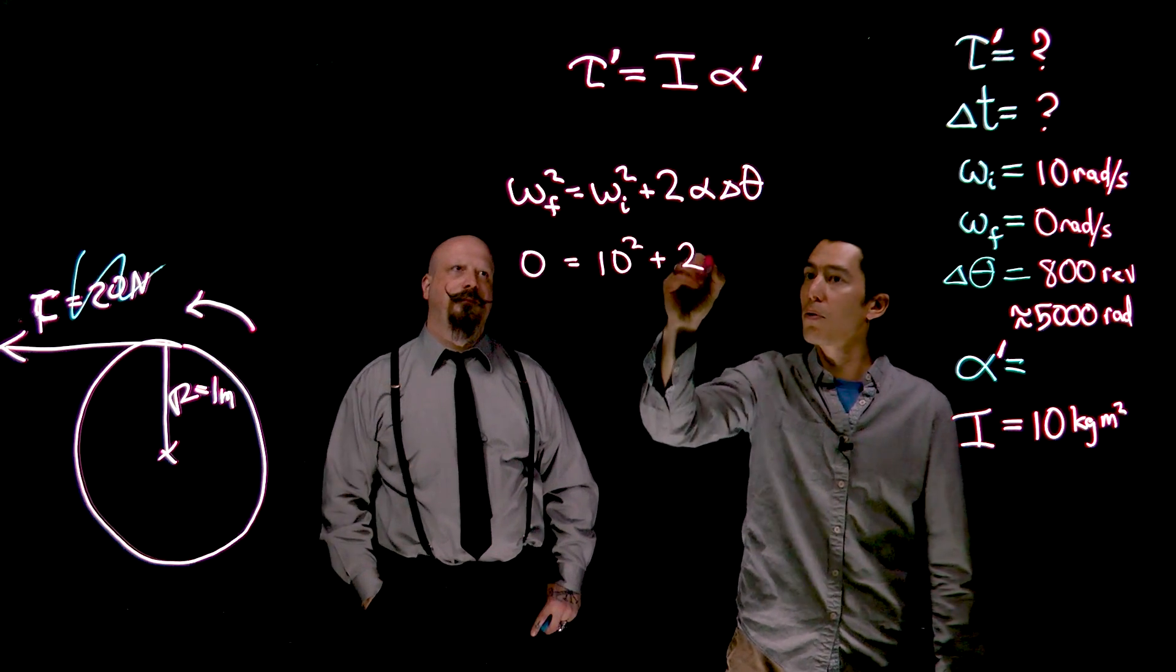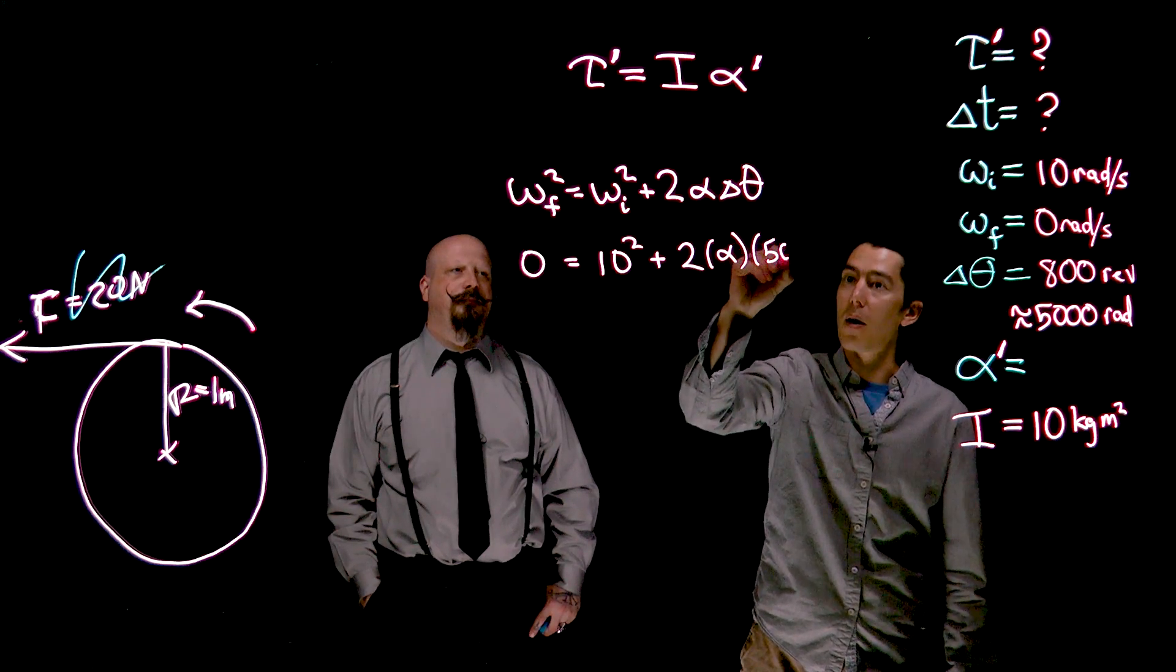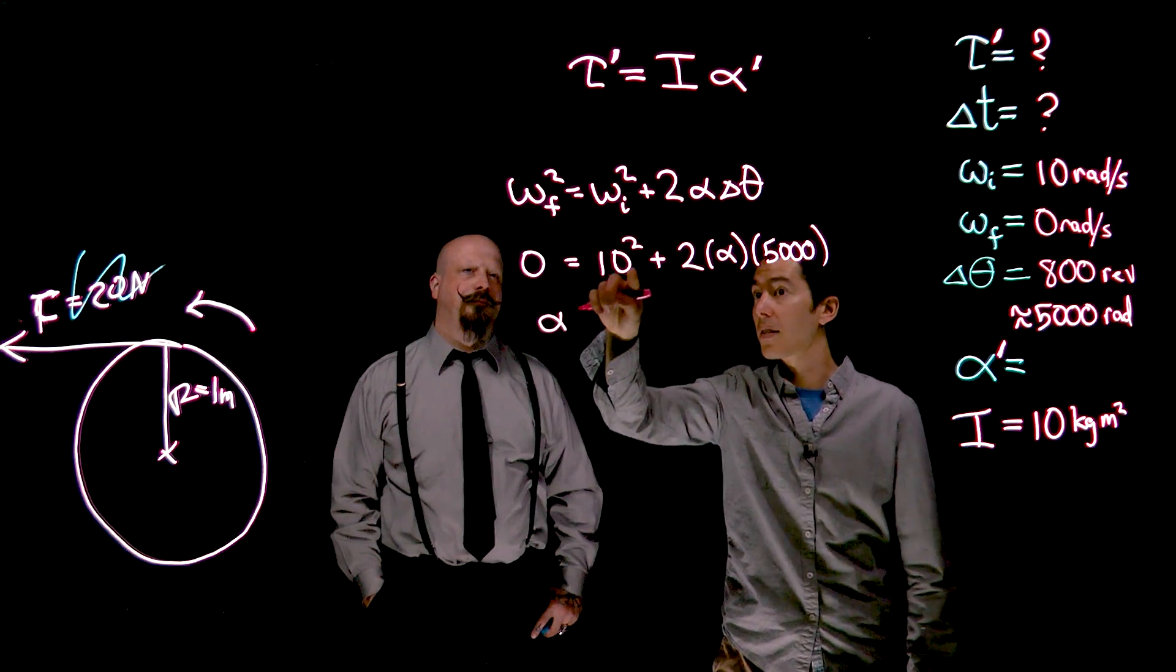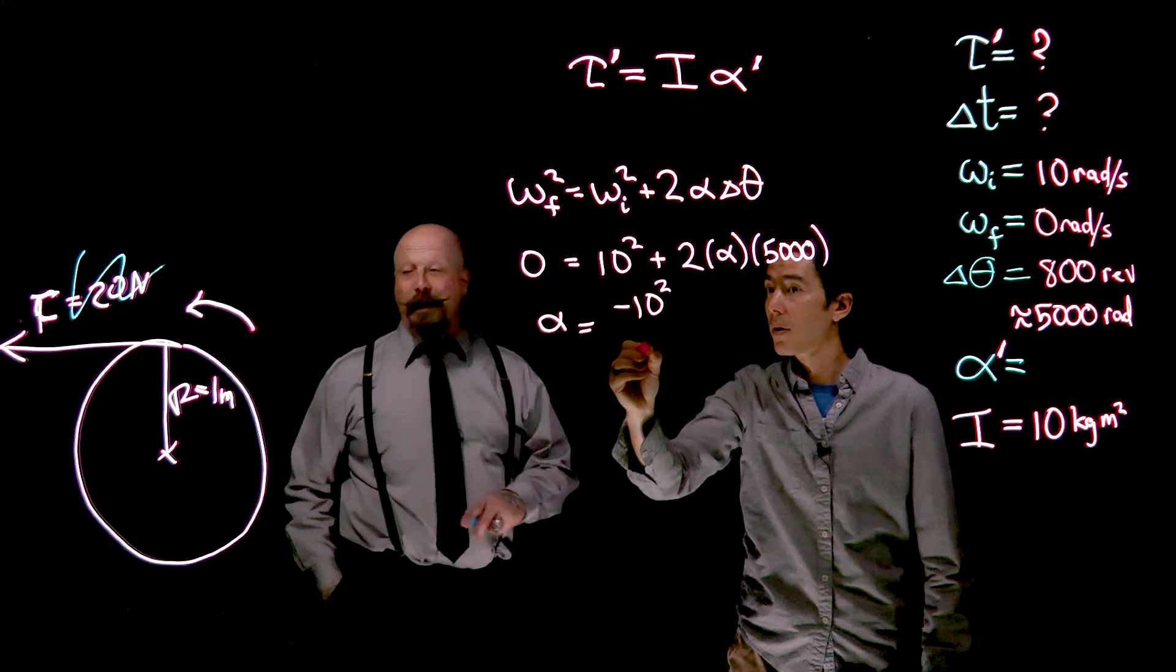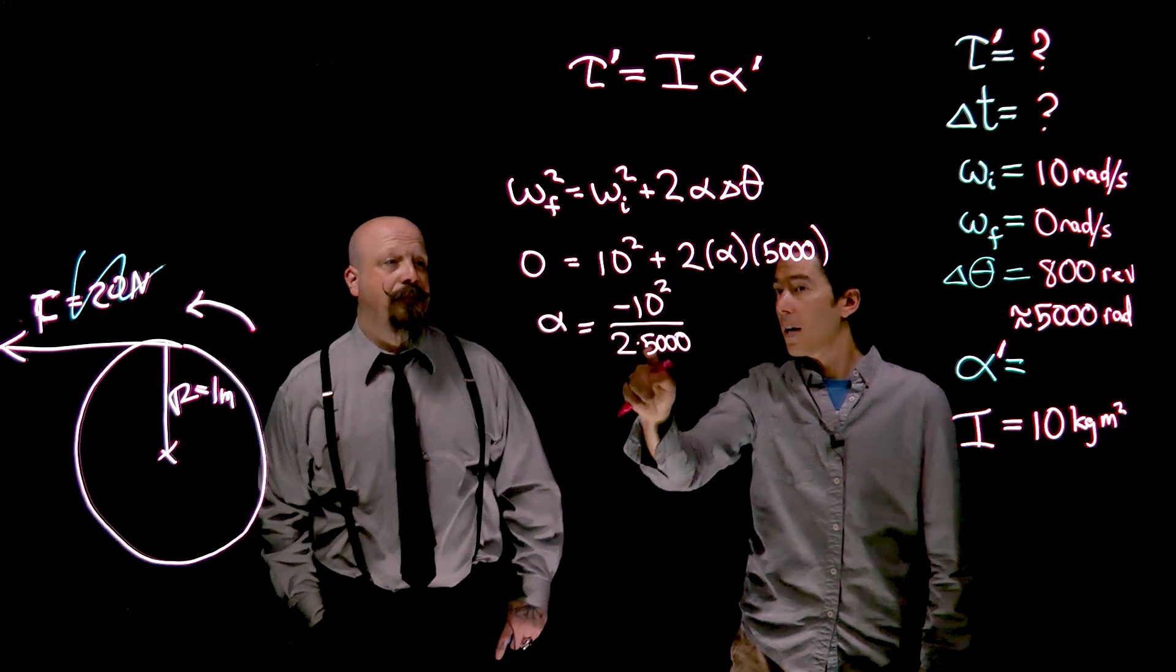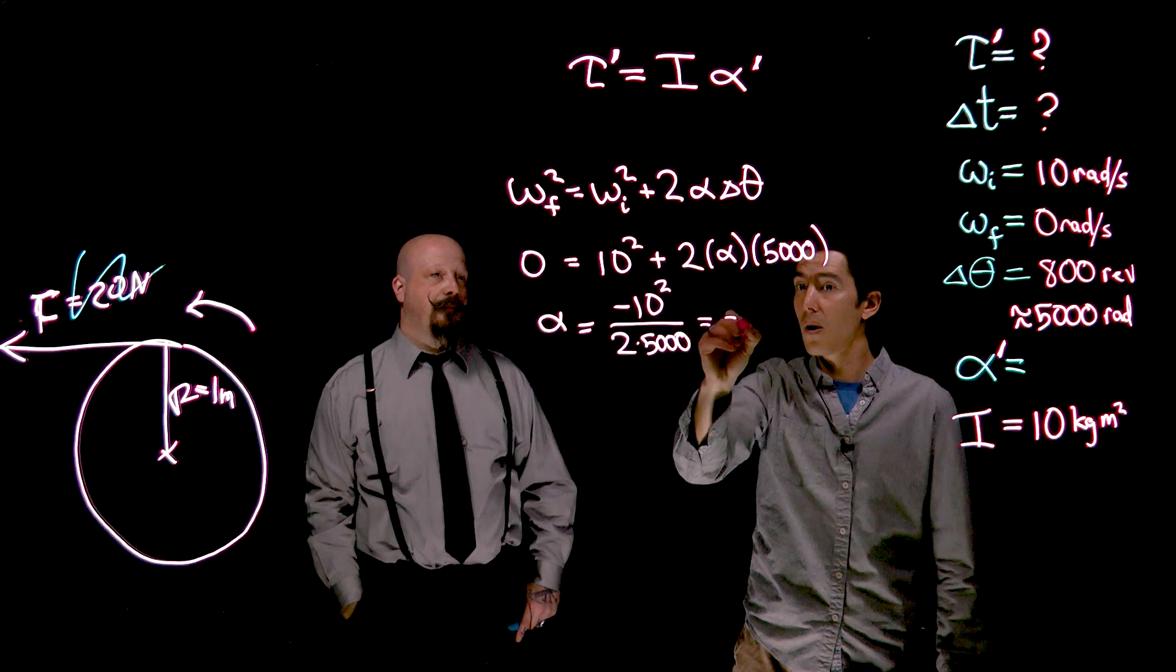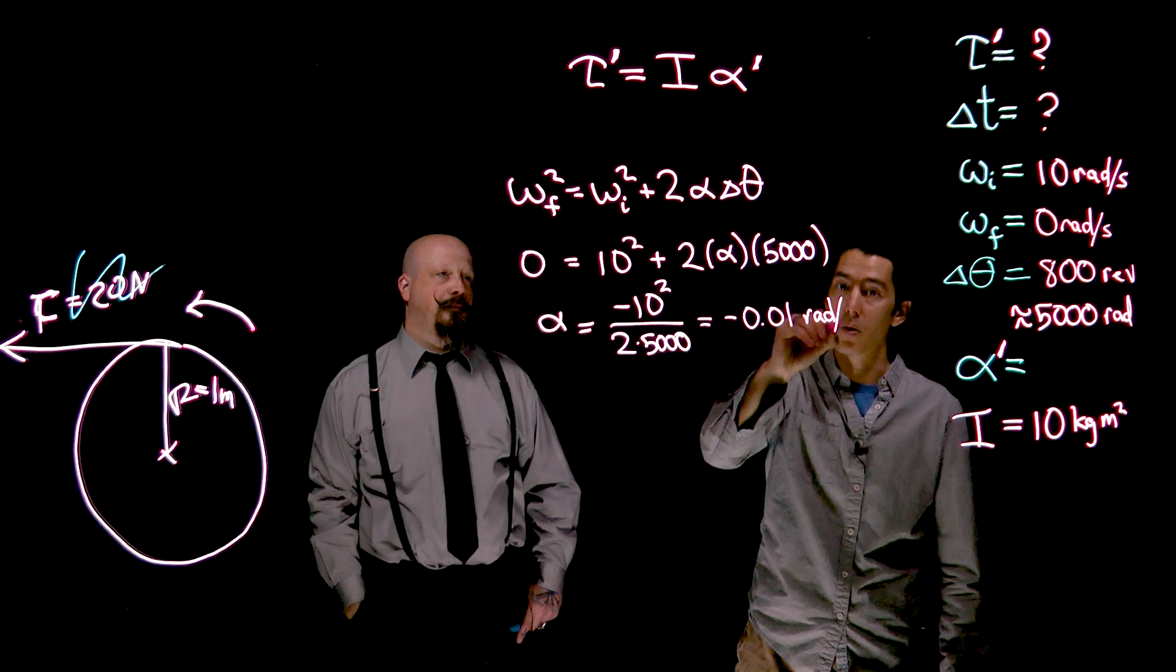Okay. So plugging the numbers in, we've got 2 times alpha, which is the unknown, times 5,000. And just to solve for alpha, we're going to bring the 10 squared to one side. It becomes a negative 10 squared, which is good because we do know that it slows down. It's decelerating, so our acceleration value is negative. Right. 100 divided by 10,000, that's a small angular acceleration of 0.01 rads per second squared.